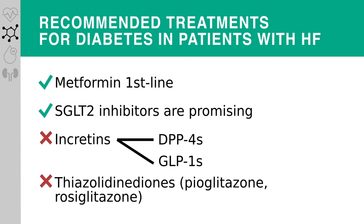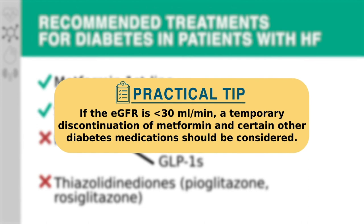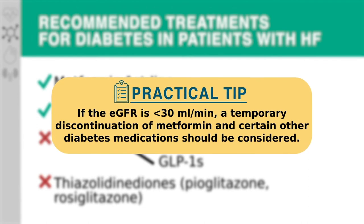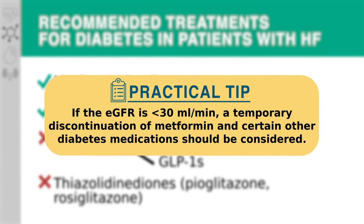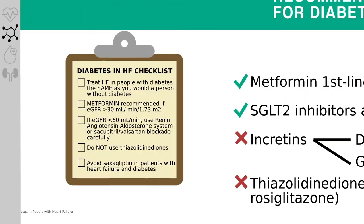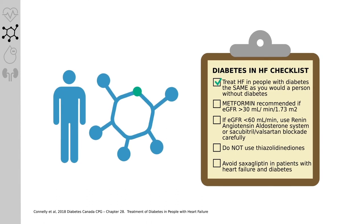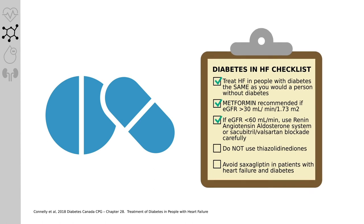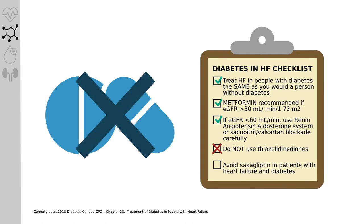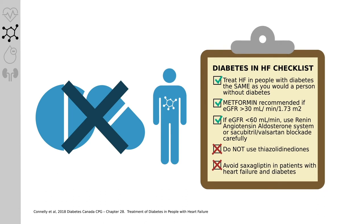The CCS recommends that thiazolidinediones should not be used in patients with heart failure. Both pioglitazone and rosiglitazone have been shown to increase the risk of heart failure events. If the patient's eGFR is less than 30 milliliters per minute, a temporary discontinuation of metformin and certain other diabetes medications should be considered. This checklist was developed by the Diabetes Canada guidelines for the treatment of diabetes with an established diagnosis of heart failure, and the recommendations are consistent with the CCS's heart failure guidelines.